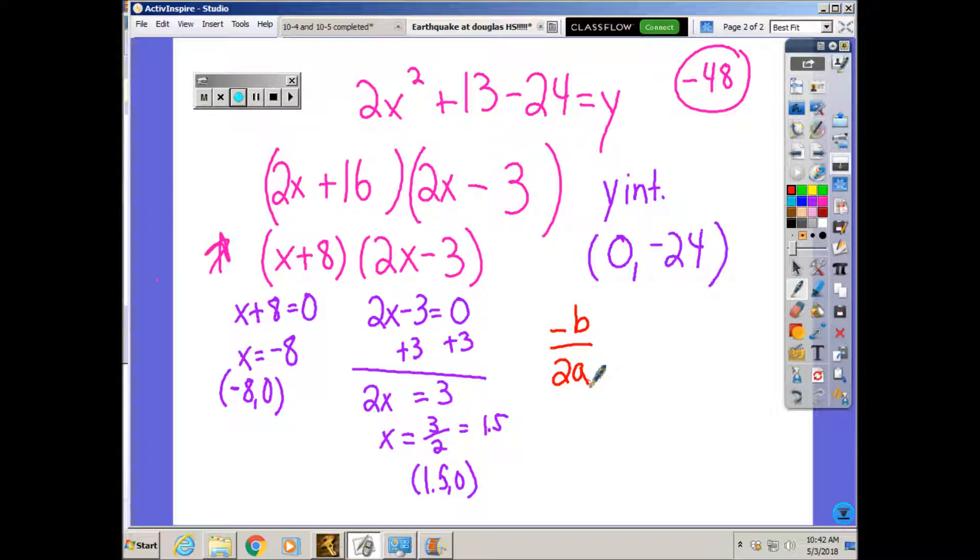Even if I didn't know how to do it, I just guessed, you're going to put in what you got. What you should have gotten is negative 13 over 4. The opposite of b, so b is 13. The opposite of b is, the opposite of 13 is negative 13. 2 times a, and a is 2. So that's negative 13 over 4.